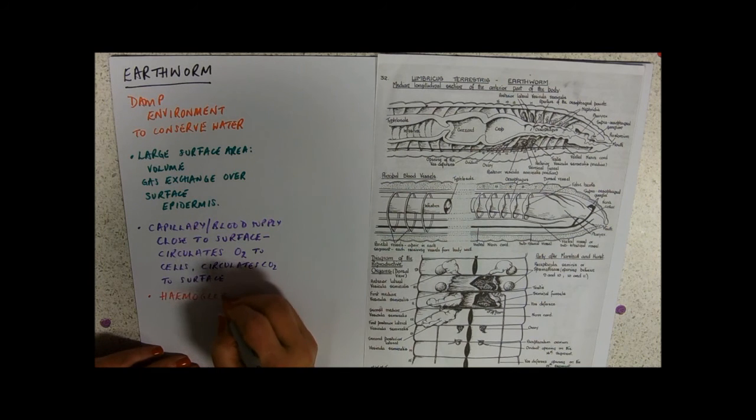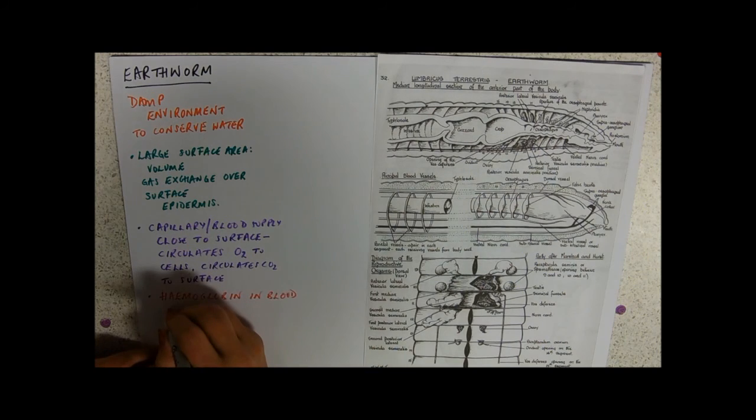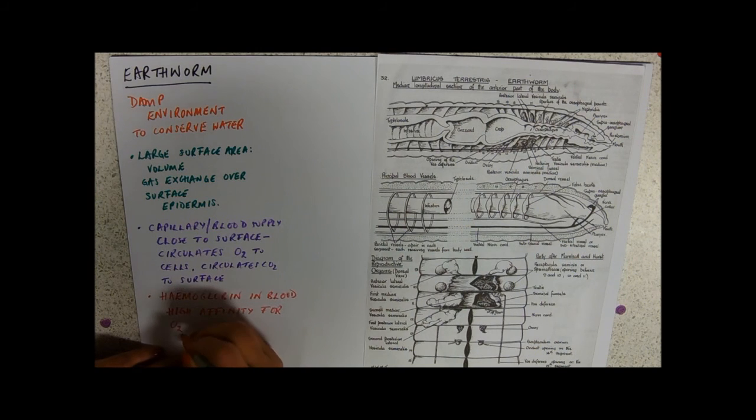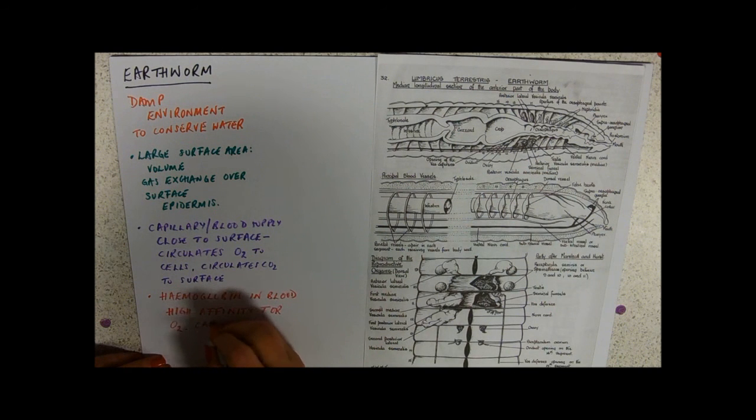So haemoglobin in the blood. Why is that important? We say that haemoglobin has a high affinity for oxygen—well, what does that mean? That means it will take it out of the air effectively and carry it to the cells. So this is going to carry oxygen to the cells.